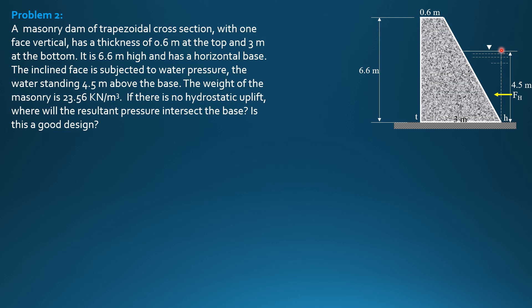The pressure diagram on the vertical projection is still triangular, so one third of 4.5 is 1.5. Then we have weight of water here. We will call this distance X1. Let's solve for X1. X1 as to 4.5 equals 2.4 as to 6.6. So X1 is 1.636 meters.